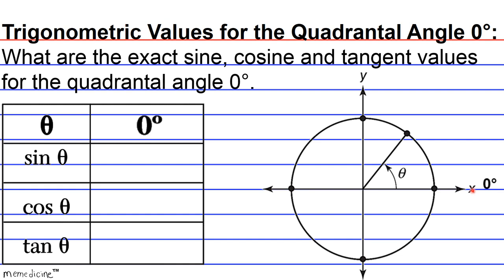And don't forget that a quadrantal angle is an angle with its terminal side on the x-axis or y-axis, such as 0 degrees, 90 degrees, negative 90 degrees, 360 degrees, etc. I'll give you a little bit more time. Again, press pause if you need to. All right, let's get into this.